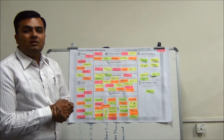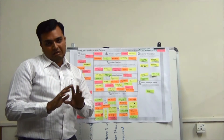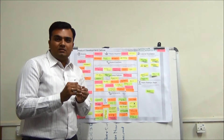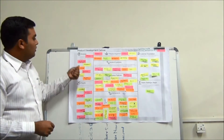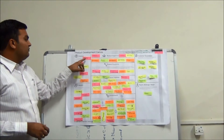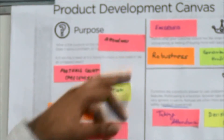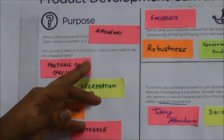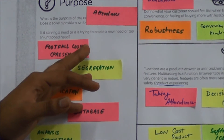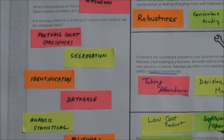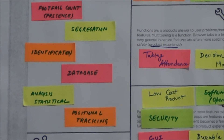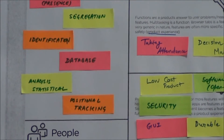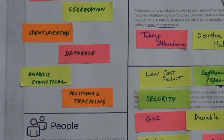The main motive is to deal with the attendance process. Where we can address attendance — or where our product can be utilized. The main purpose is to take attendance. Along with that, we may have presence count of visitors at any place, or number of persons coming in. We may segregate the data, identify persons, create a database, do analysis, and do tracking of different visitors or persons.